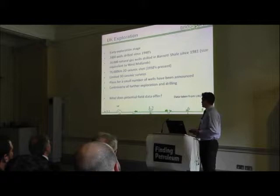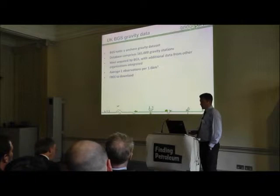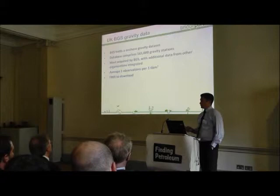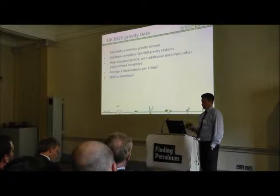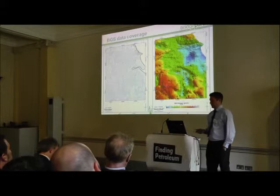The question is: how can potential field data help, and what does potential data have to offer? We're going to look at the BGS land gravity dataset. This is a database put together by the BGS, which includes both BGS and other external datasets that have been integrated into it. It comprises 165,000 land gravity stations over the whole of the UK, with an average point spacing of approximately 1.6 km. The good thing about this dataset is that it's free to download — you can go onto the BGS website, download it, and take a look at it.